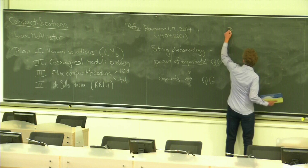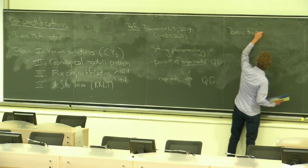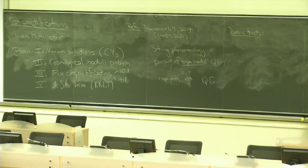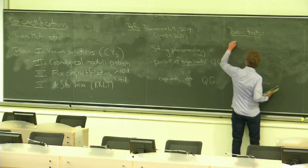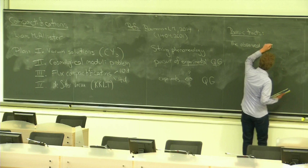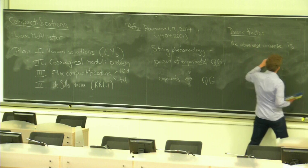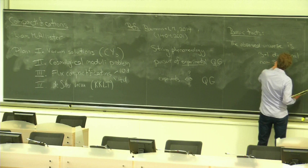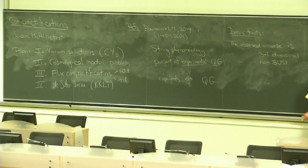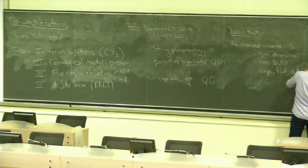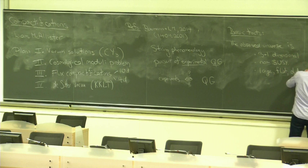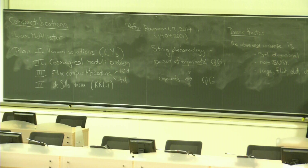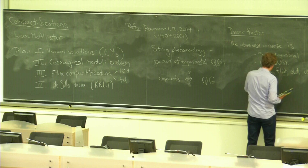So if we're going to bring quantum gravity and experiment together, we have to begin with the most basic facts. It won't do to try to model, in string theory, very subtle and complicated phenomena before we've captured the most basic one. So the most basic facts that we need are that the observed universe is 3 plus 1 dimensional and non-supersymmetric.